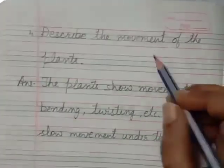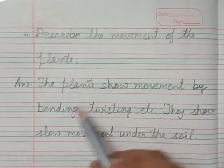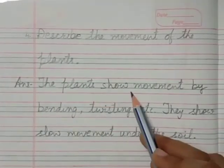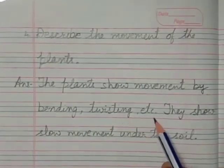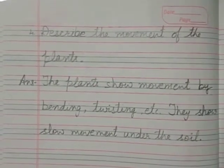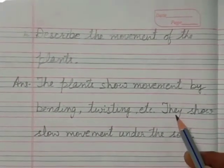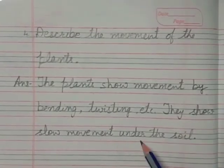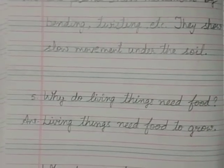Describe the movement of the plants. The plants show movement by bending, twisting, etc. — they bend, twist, and sway. This is how their movement is observed. They show slow movement under the soil.